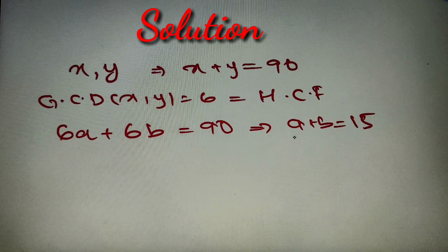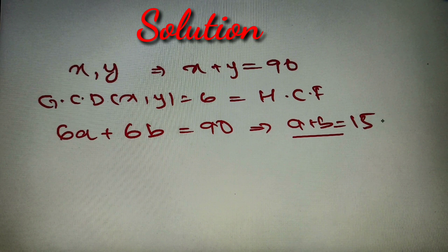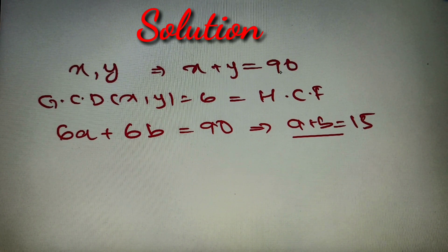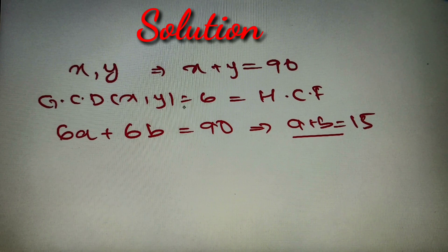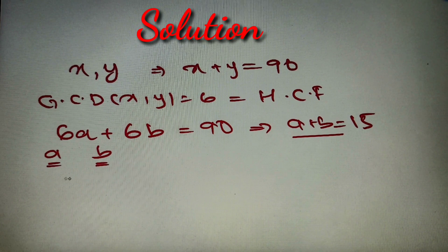If we find the number of ordered pairs a, b for which a + b = 15, then we'll basically find the number of ordered pairs for which x + y = 90 and the GCD is 6. So we'll write a, b and write down all the possible pairs.